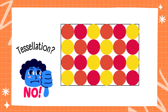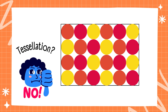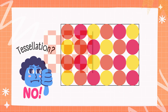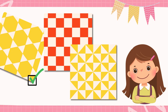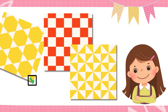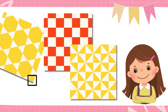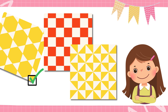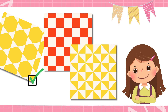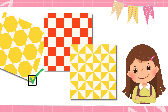Circles don't tessellate because they don't fit together without leaving gaps. Some shapes like squares, triangles, and hexagons are great for tessellating, while others like circles do not work because they leave gaps.